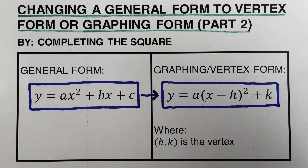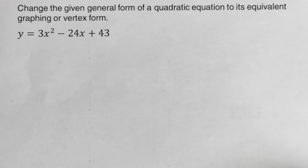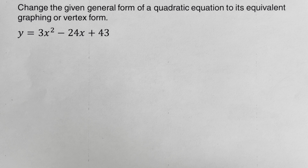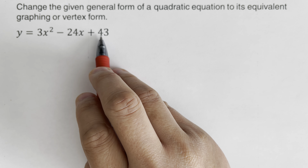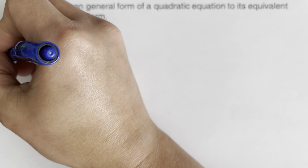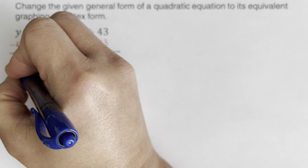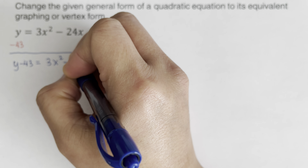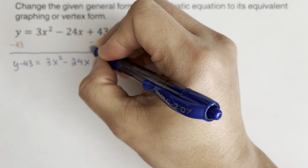Let's take this first example: change the given general form of a quadratic equation to its equivalent graphing or vertex form. The first step is to put the constant on the other side. The constant here is 43, so we subtract 43 from both sides. The equation becomes y minus 43 equals 3x squared minus 24x.